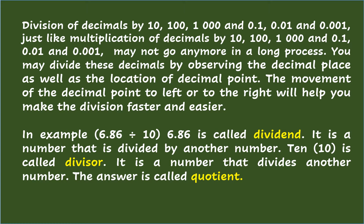In the example six and eighty-six hundredths divided by ten: six and eighty-six hundredths is called the dividend — it is the number that is divided by another number. Ten is called the divisor — it is the number that divides another number. The answer is called the quotient.